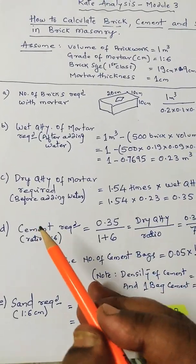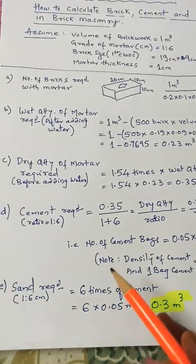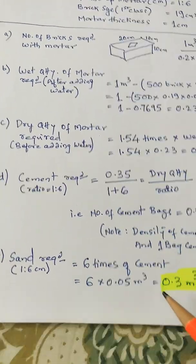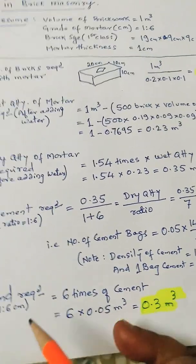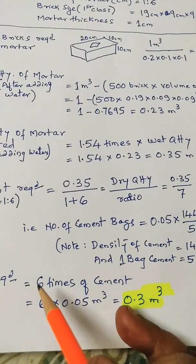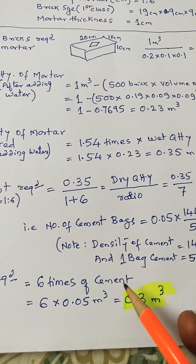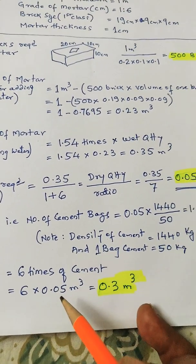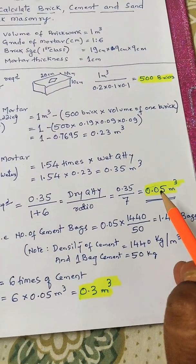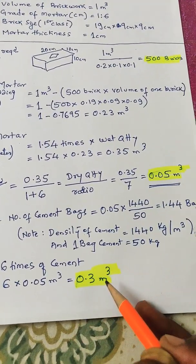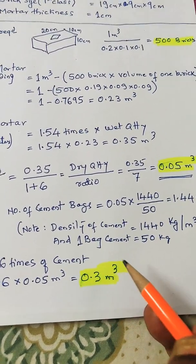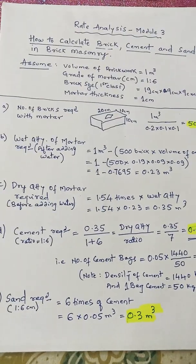So the cement required is 1.44 bag. Next sand. Sand is of course we know in the ratio 1 is to 6. 6 times of cement we require. That is 6 into 0.05 meter cube. That is 0.3 meter cube. So 0.3 meter cube of sand is required.